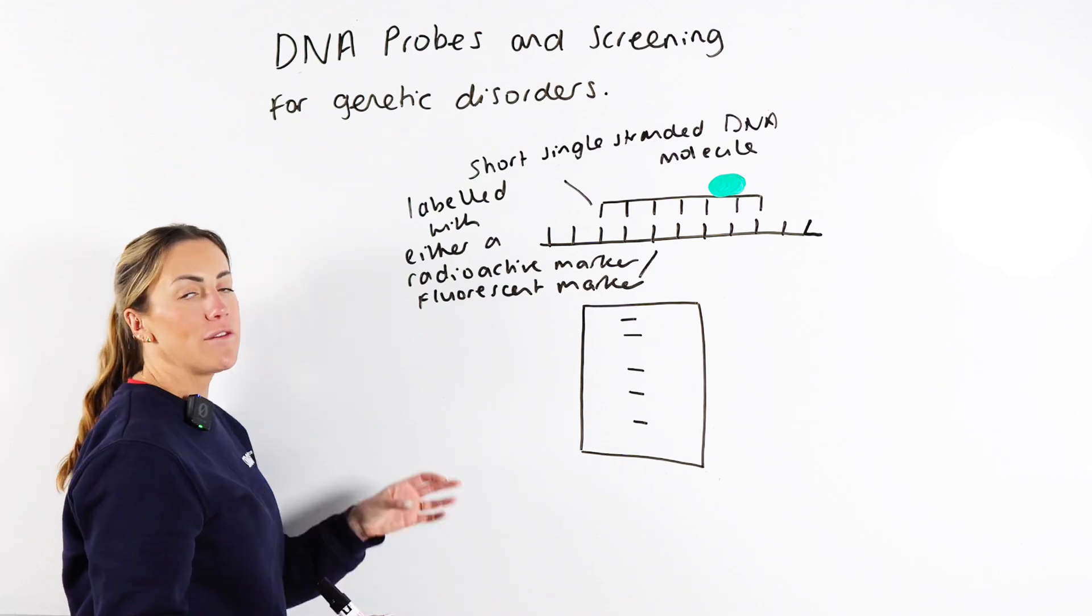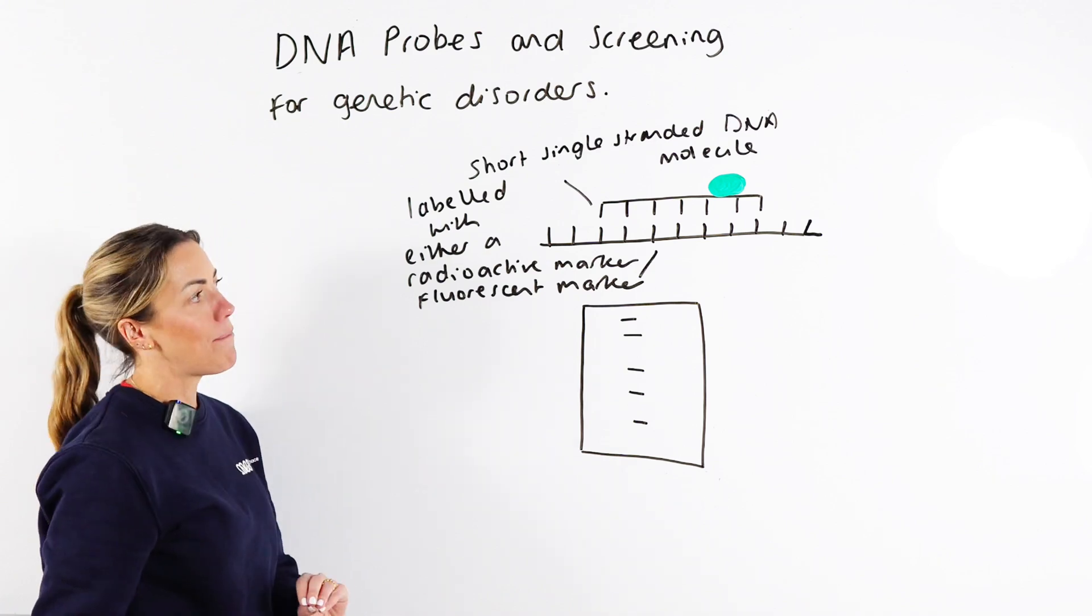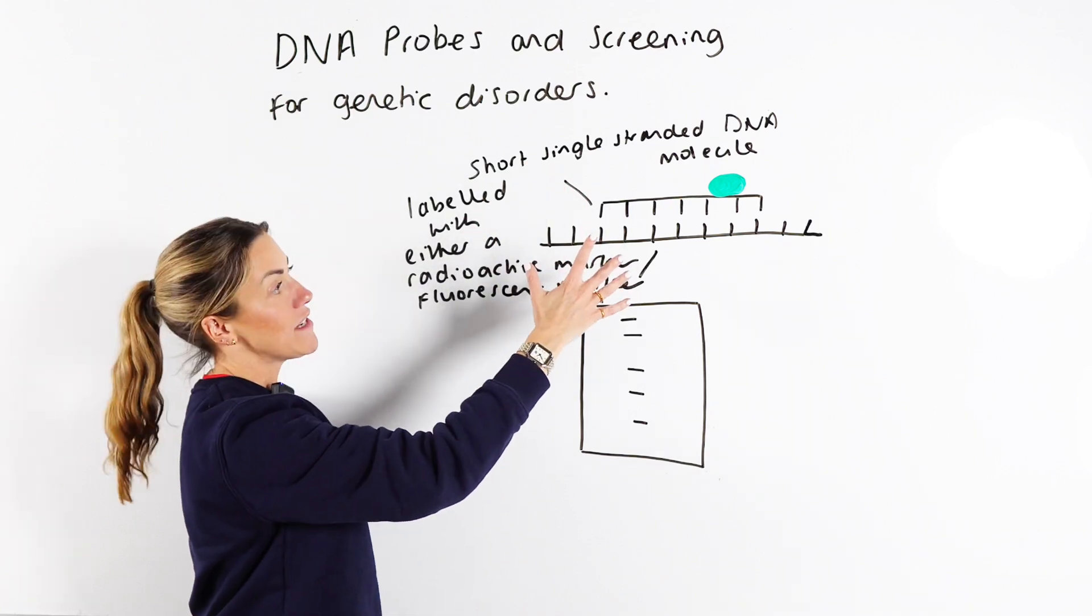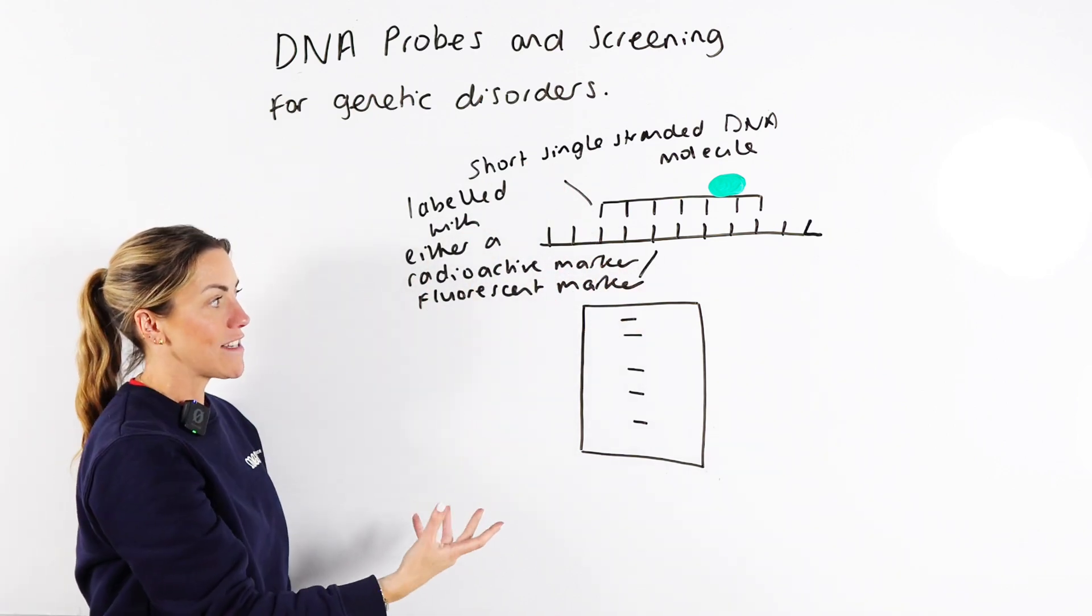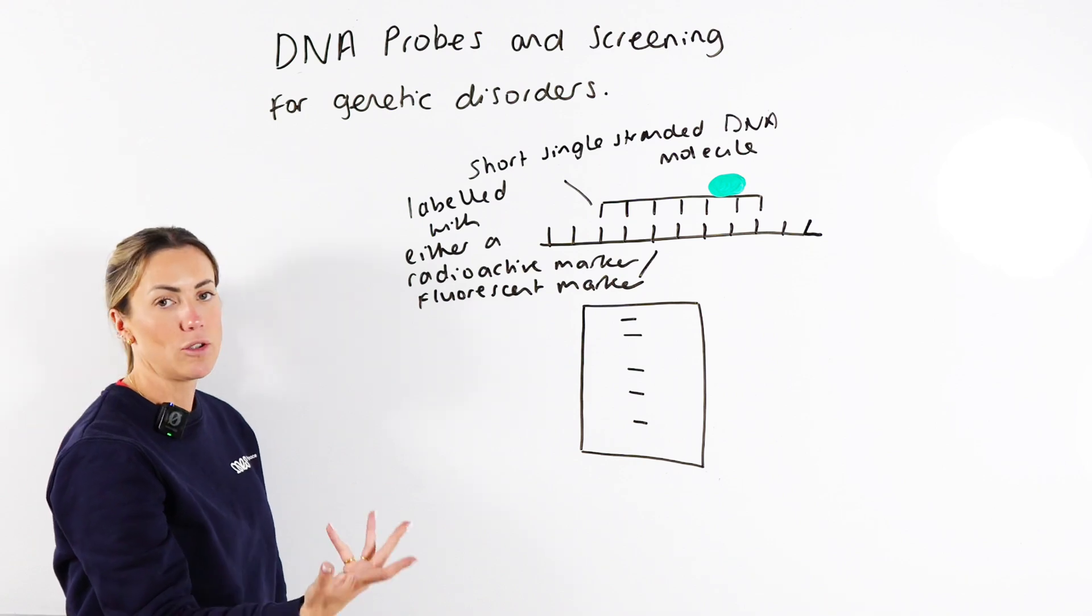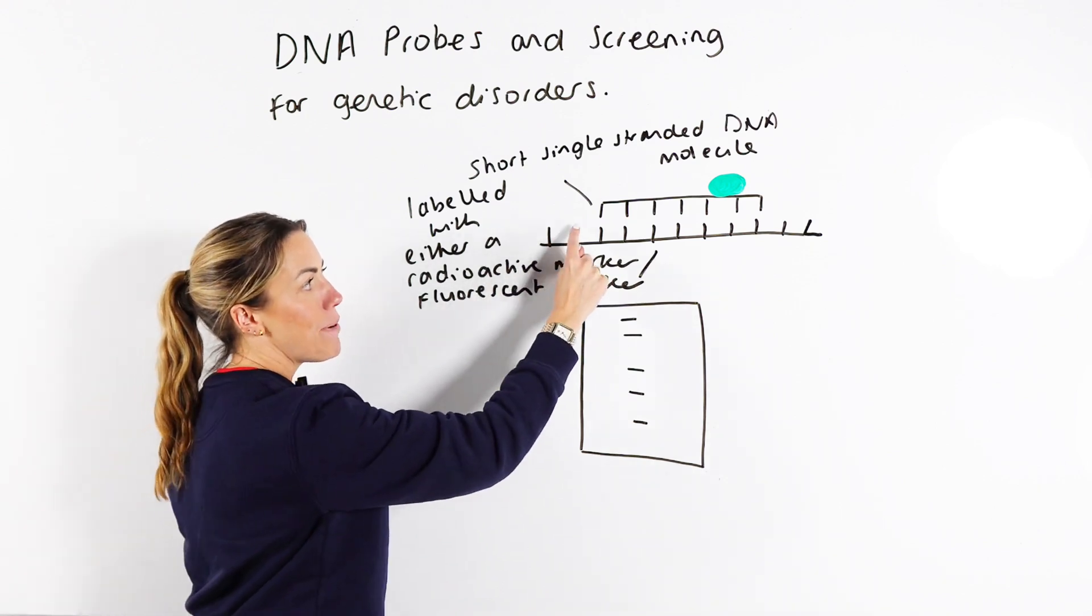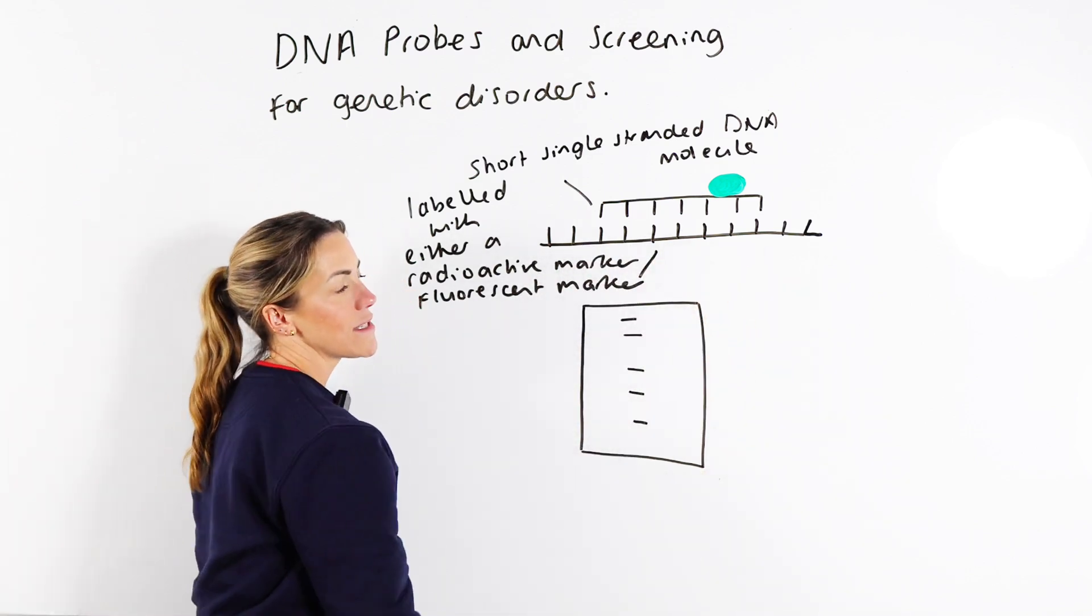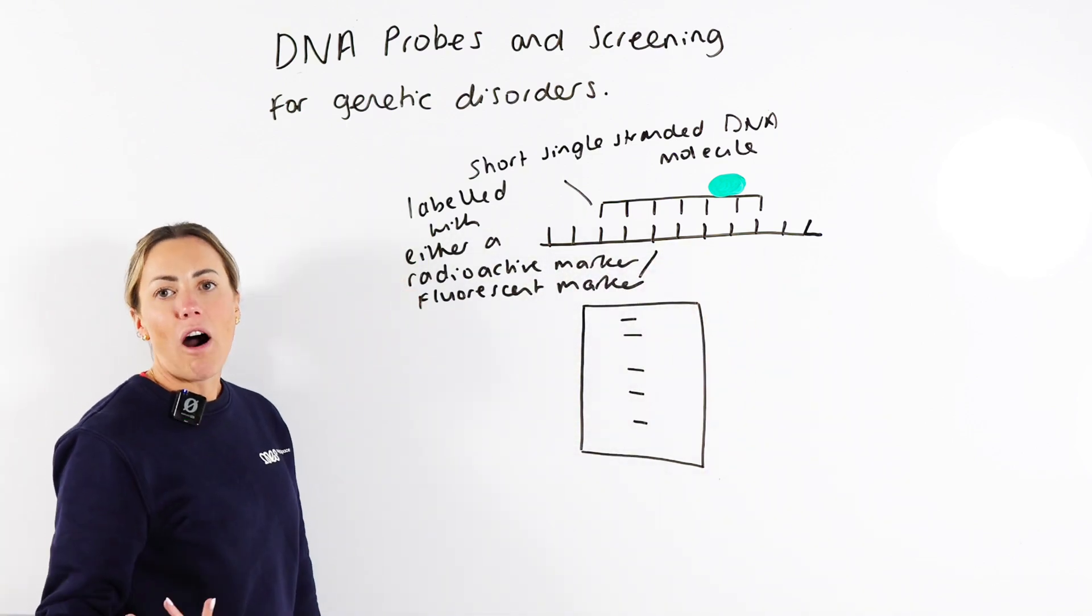So I think we've covered three important things so far about a DNA probe. It's short, it's a single strand of DNA, it's labelled with either a radioactive marker or a fluorescent marker or label and its base sequence is going to be complementary to the base sequence in the allele of interest.